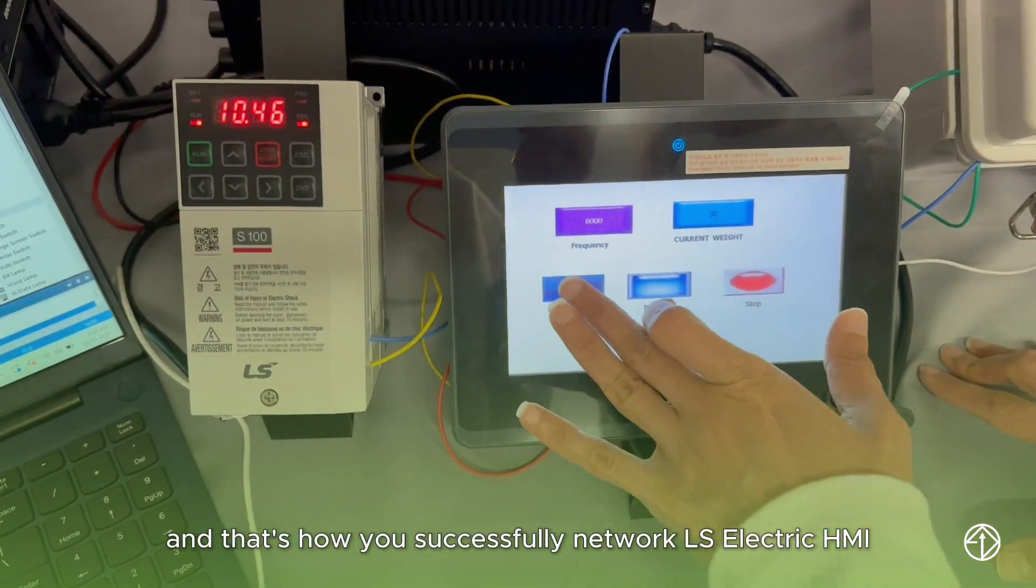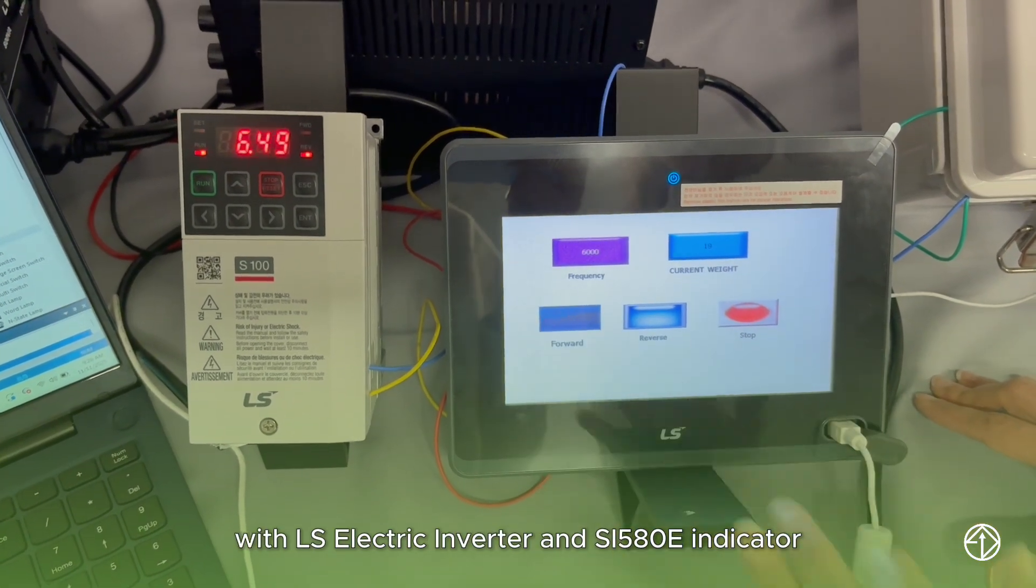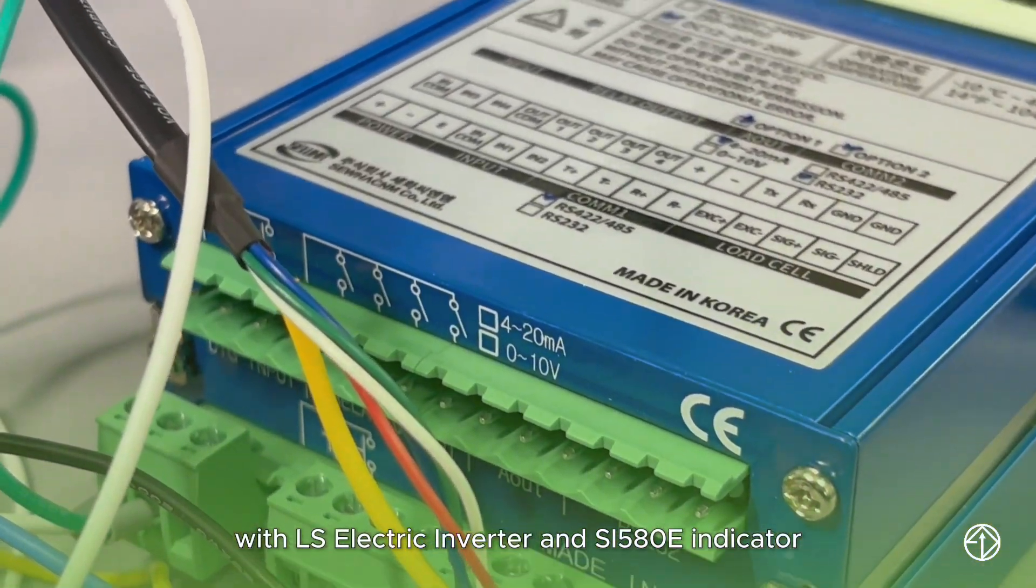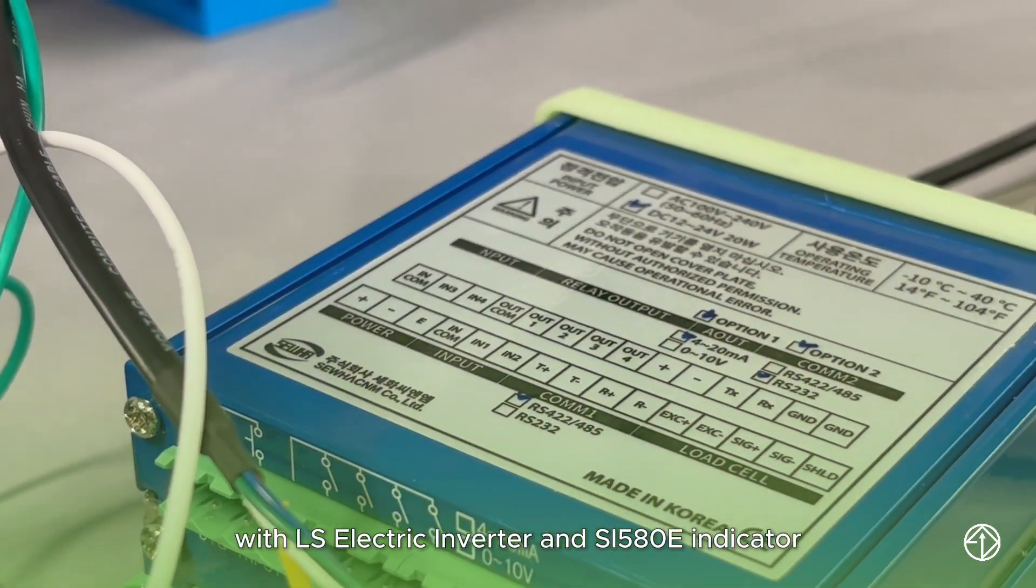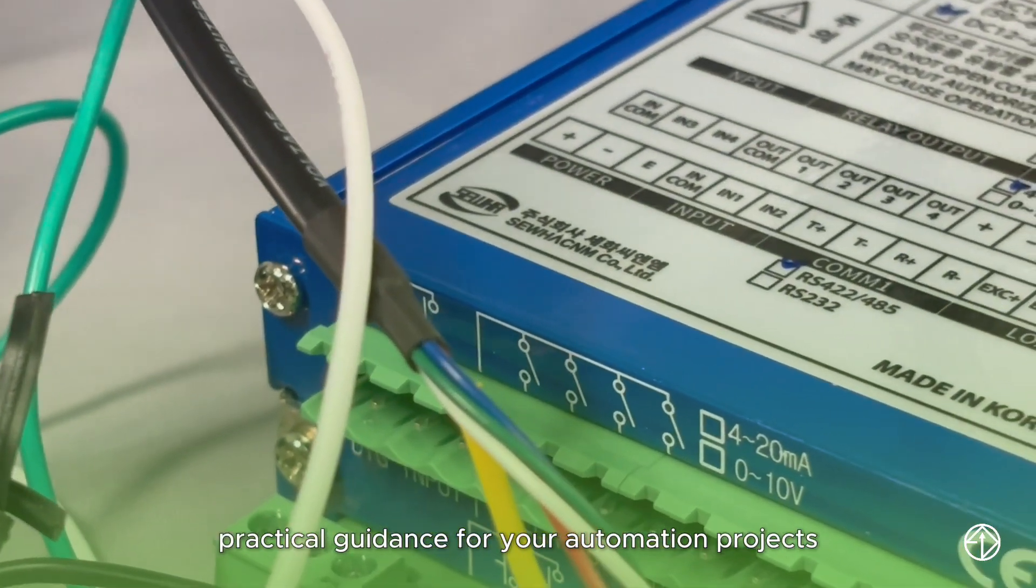And that's how you successfully network an LS electric HMI with an LS electric inverter and SI580E indicator. We're committed to providing clear, practical guidance for your automation projects. Thanks for watching.